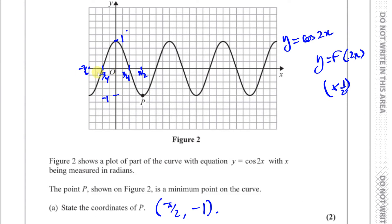They didn't ask us to put all these values, but I'll label the axis points. Every four squares is π/2, so the values go π/2, π, 3π/2, 2π, 5π/2, 3π going right, and −π/2 to the left. That's the graph — we don't actually have to put these values in, but I've done it for the next part of the question.